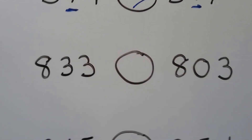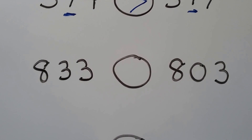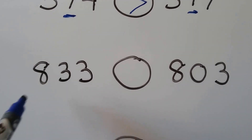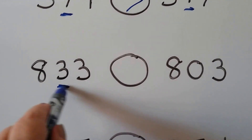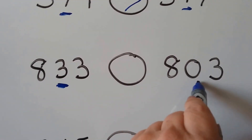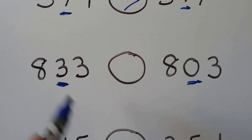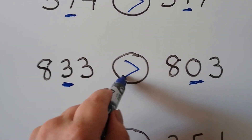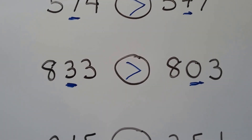Which one is greater — 833 or 803? They both have eight in the hundreds place, so we look at the tens place. This has a three, this has a zero. We know this one's greater. 833 is greater than 803.